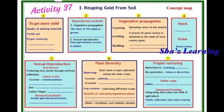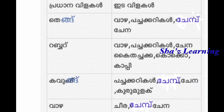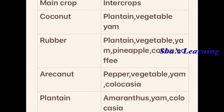Crop rotation means cultivating different crops in sequence, with benefits of cultivating leguminous plants. Main crops and inner crops include: coconut with plantain or vegetable; rubber with plantain, vegetable, yam, or pineapple; cocoa and coffee with areca nut, pepper, vegetable, yam, colocasia, plantain, amaranthus, or yam.